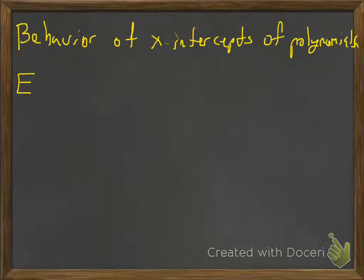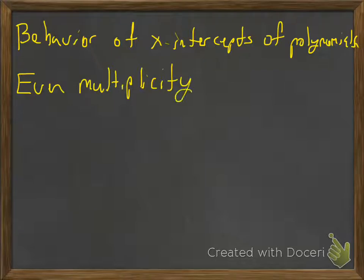So that's something that we've talked about in class, and it has to deal with the multiplicity. The multiplicity is going to tell us what's happening at the x-intercept. So if we have an even multiplicity for our root, it's going to bounce, or you can call it a touch also.